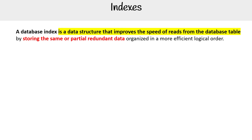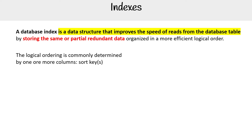Let's talk about database indexes, which is a data structure that improves the speed of reads from a database table by storing the same or partial redundant data organized in a more efficient logical order. The logical ordering is commonly determined by one or more columns, such as sort keys.